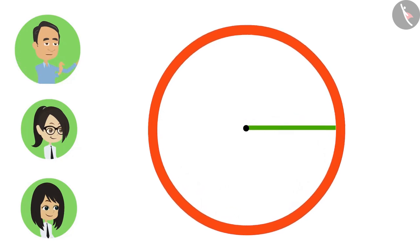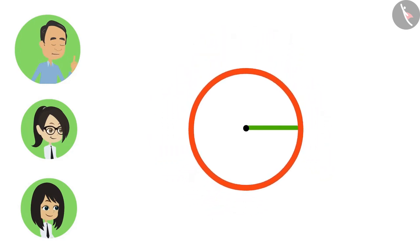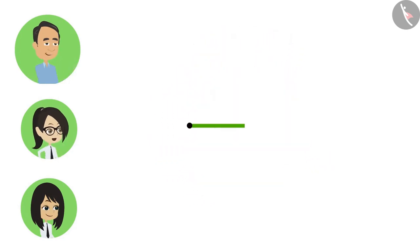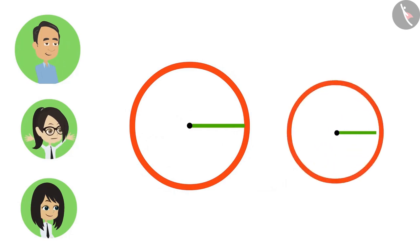Now, if we decrease this radius, then we will get a small circle. Larger the radius, the larger the circle. And smaller the radius, the smaller the circle.